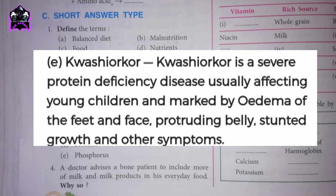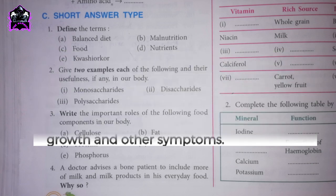E. Kwashiorkor. Kwashiorkor is a severe protein deficiency disease usually affecting young children, marked by oedema of the feet and face, protruding belly, stunted growth, and other symptoms.